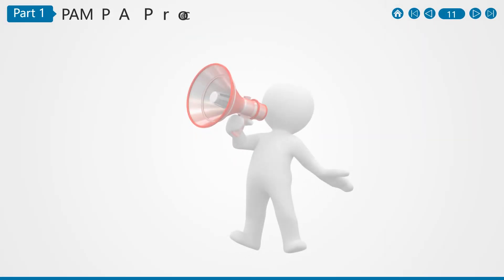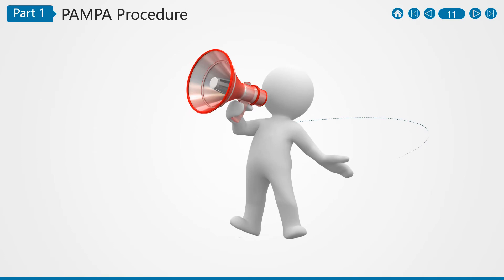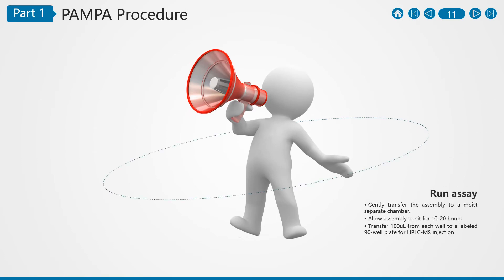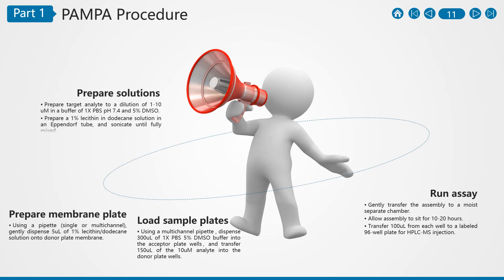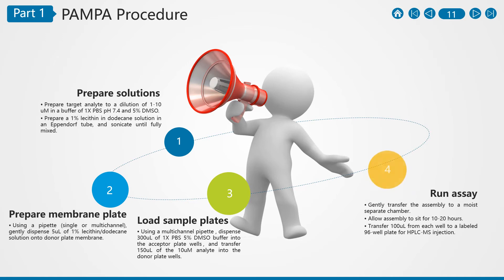Run assay: gently lower the donor plate wells into the acceptor plate wells. Gently transfer the assembly to a moist, separate chamber and allow the assembly to sit for 10–20 hours.